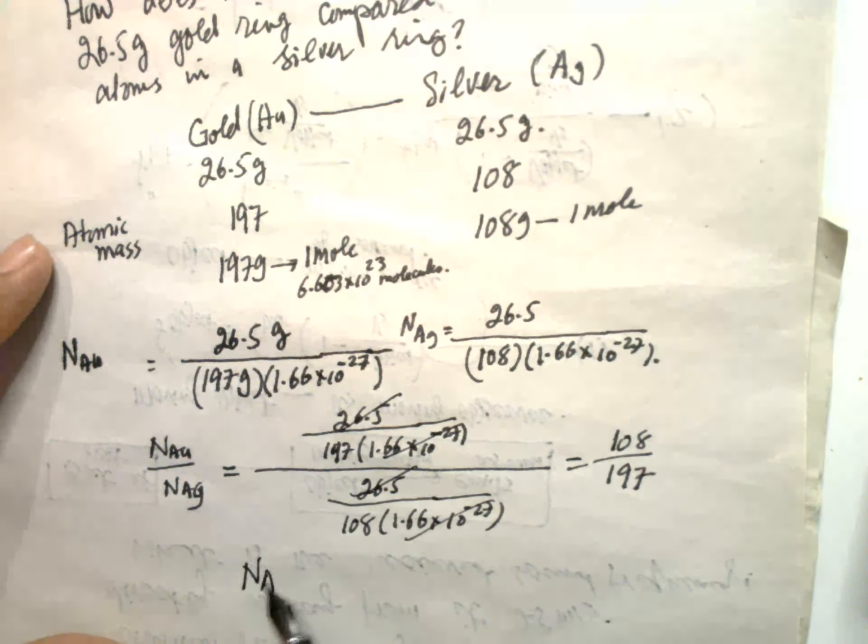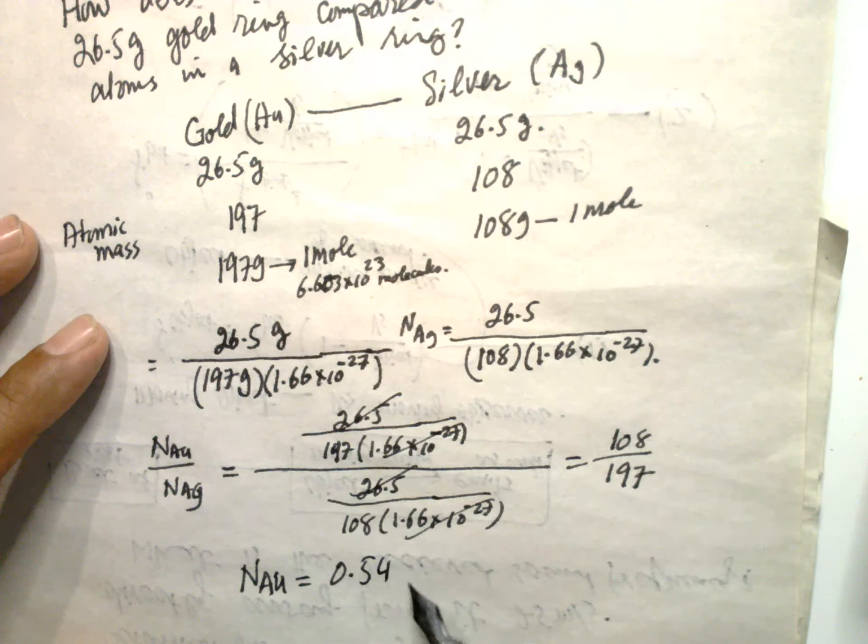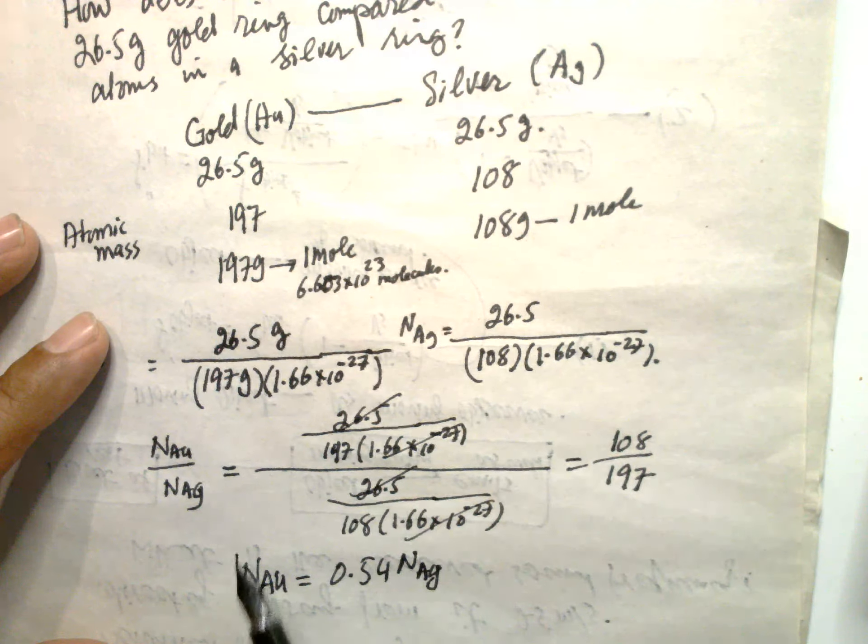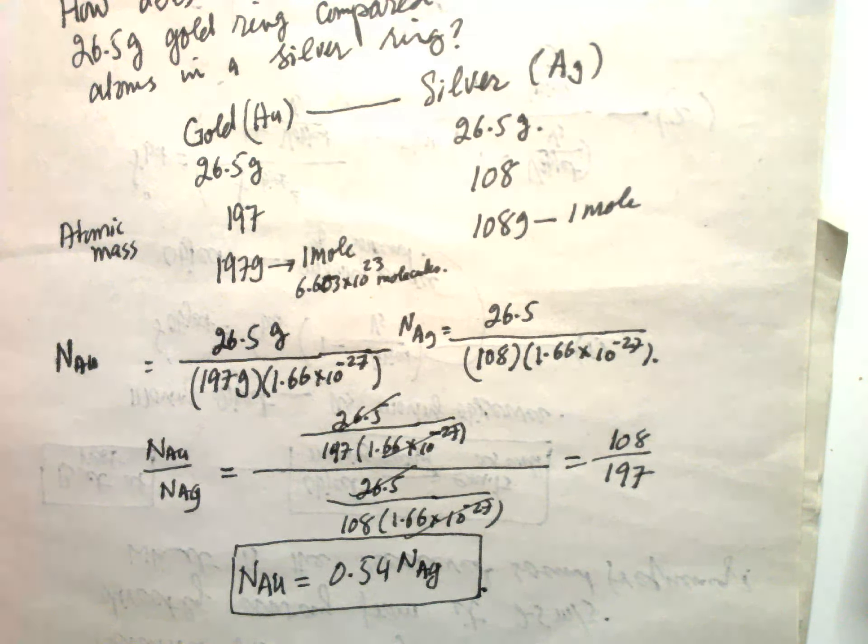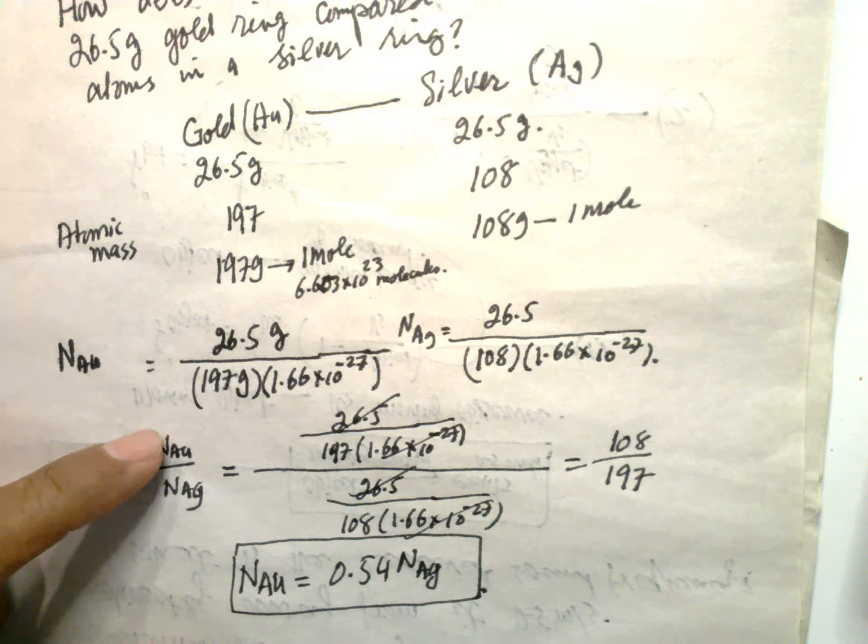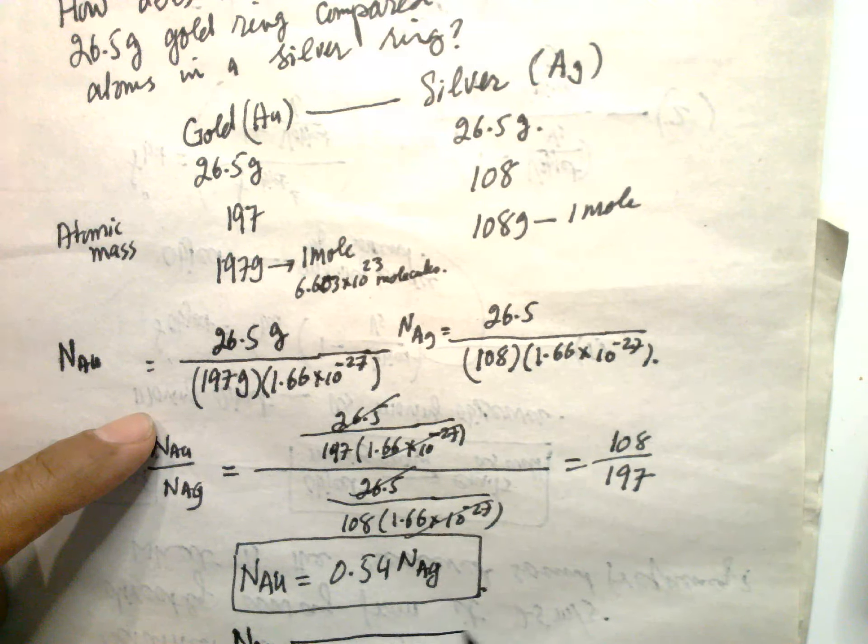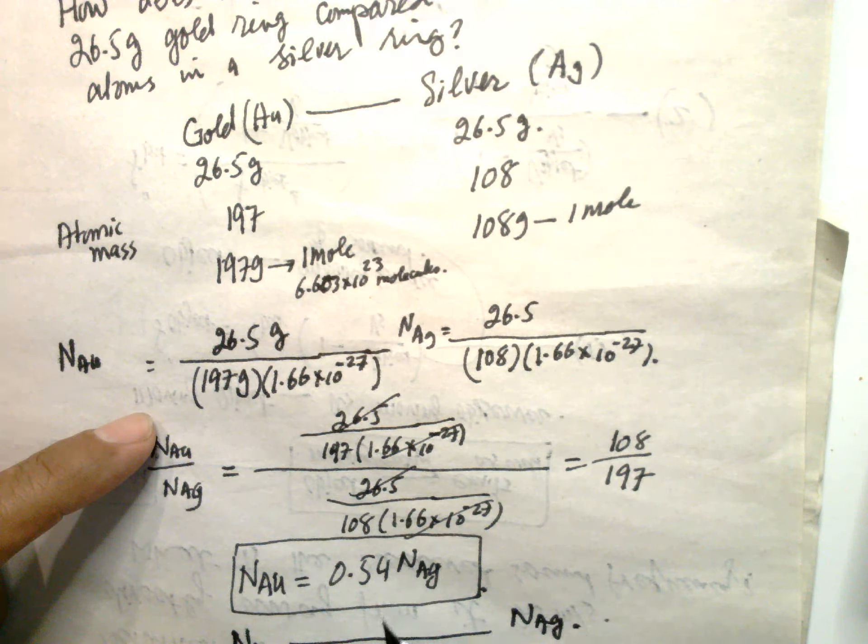So N of Au is equal to 0.54 N of Ag. So that is the comparison. N of Au, N of Ag. So that is 54%.